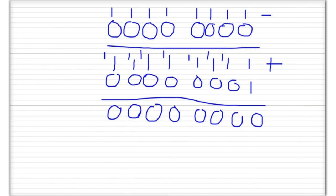There are two good reasons why we use complements — usually twos complement. First, it's easy to calculate: the process simply involves swapping zeros and ones to get the ones complement, then adding one. Second, they have simple algorithms for doing subtractions. That's how to represent negative numbers in binary using ones and twos complements. Thanks for watching.